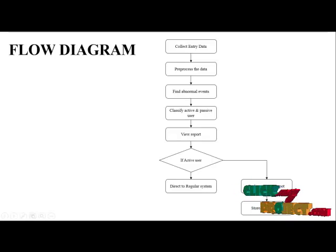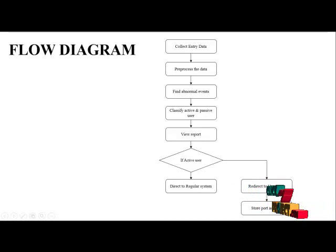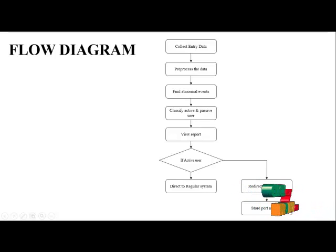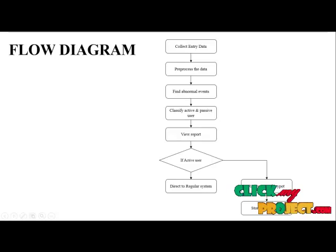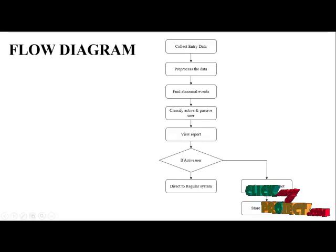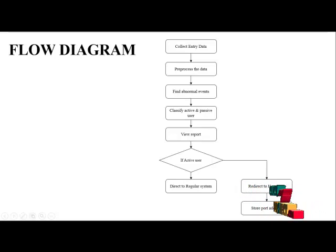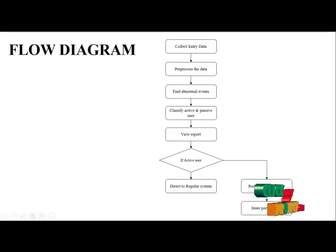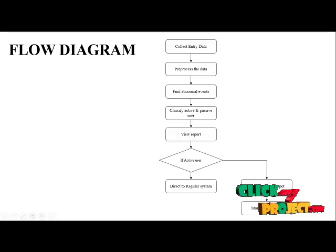Then we view the report showing the number of active users and passive users. If a user is active, we directly assign them to the regular system. If a user is passive, we redirect them to the honeypot, store the port address of the user, and then close the program.